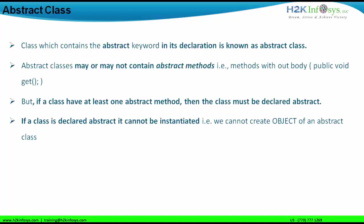It might be possible that an abstract class does not have a main method, but it can still have methods. An abstract class can have not only abstract methods but also concrete methods. Concrete methods are those which have a body part — everything we have created until now are concrete methods. If a concrete method is static, I may call it within the abstract class, but I still cannot create an object of the abstract class.